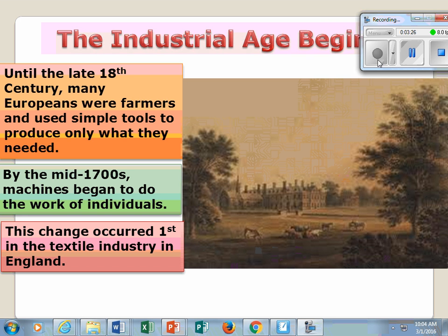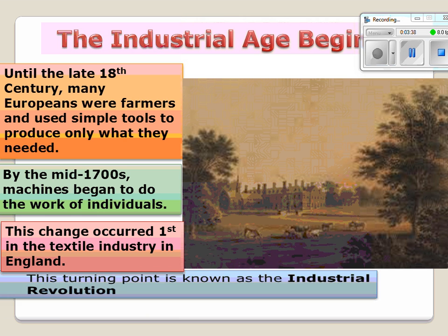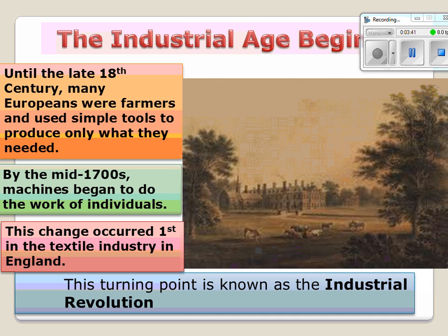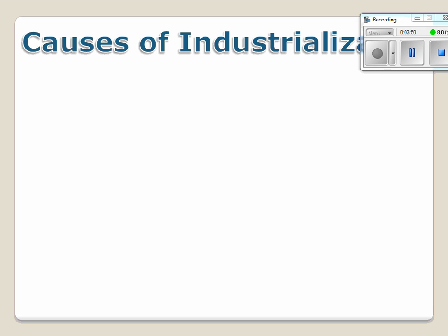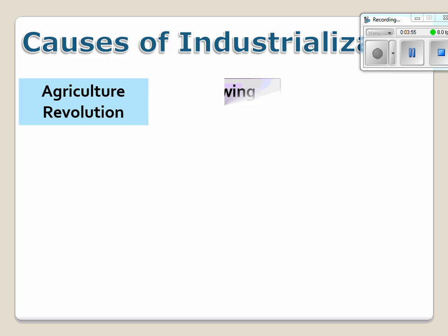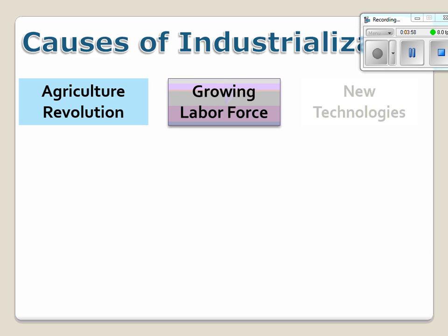This turning point is known as the Industrial Revolution. It began in the 1700s and was a result of exploration. Now we're going to move on to the causes of industrialization. There are three main causes: one is the agricultural revolution, one is the growing labor force, and the third is the development of new technologies.